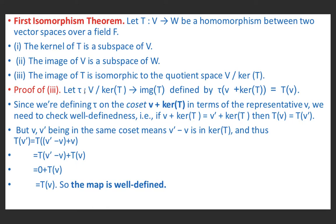Let τ be a mapping from V/ker(T) to im(T), defined by τ(v + ker T) = T(v). The quotient space V/ker(T) is a set of all cosets. Since we are defining τ on cosets v + ker(T) in terms of the representative v, we need to check well-definedness: if v + ker(T) = v' + ker(T), then T(v) = T(v').